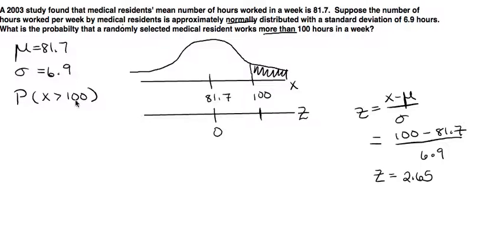So what does this mean? Now instead of finding the probability of x greater than 100, we can use the standard normal table to find the probability that z is greater than 2.65. All right, now probability that z is greater than 2.65, we're going to use the standard normal table. Let me go over to that right now.